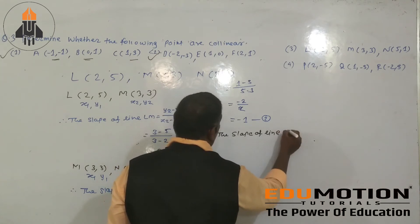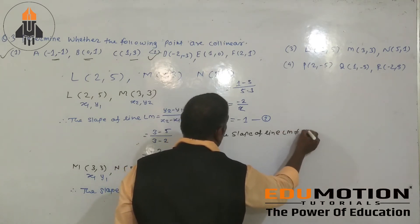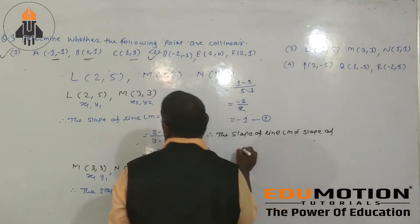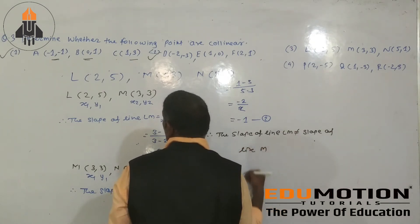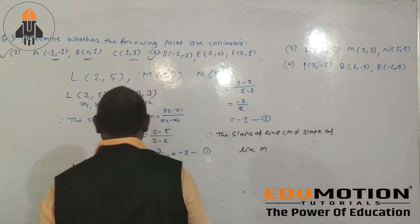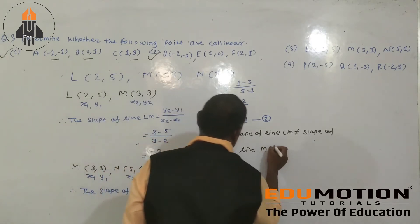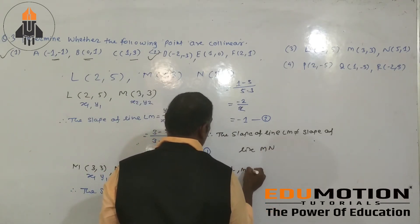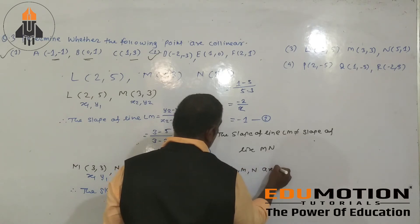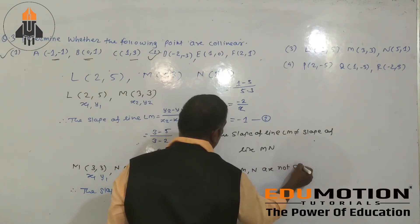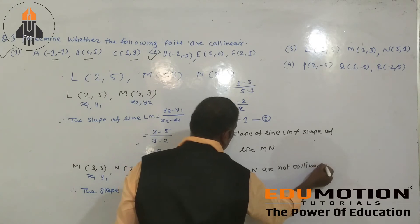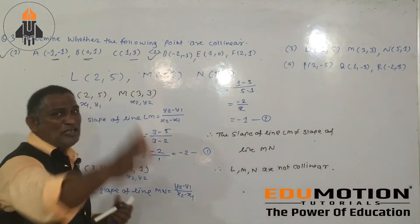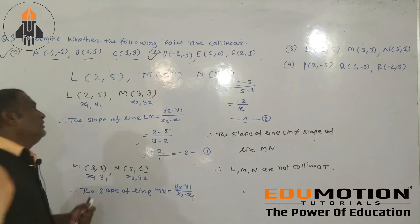Therefore the slope of line L is not equal to the slope of line M. Therefore points L, M, R are not collinear — these points are not collinear.